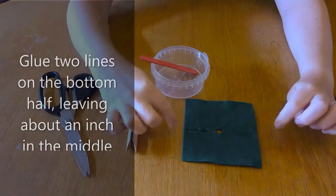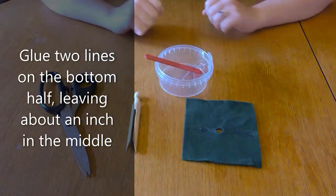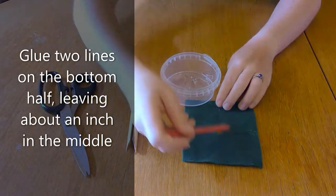Next I'm going to glue two lines going from the bottom to the middle, leaving about half an inch in the middle for your peg to fit through.